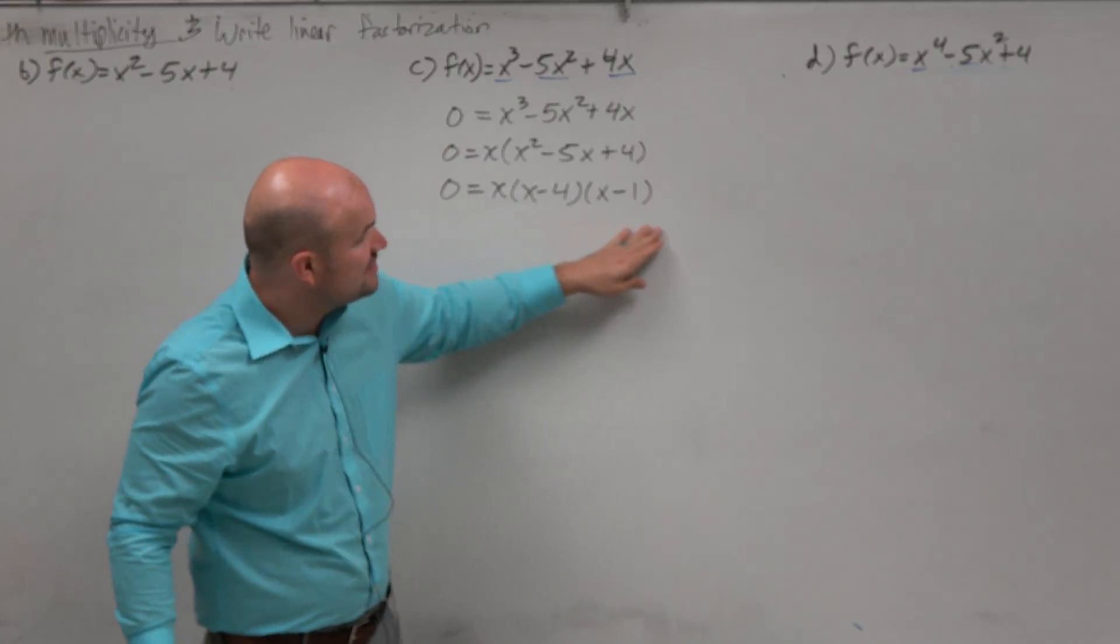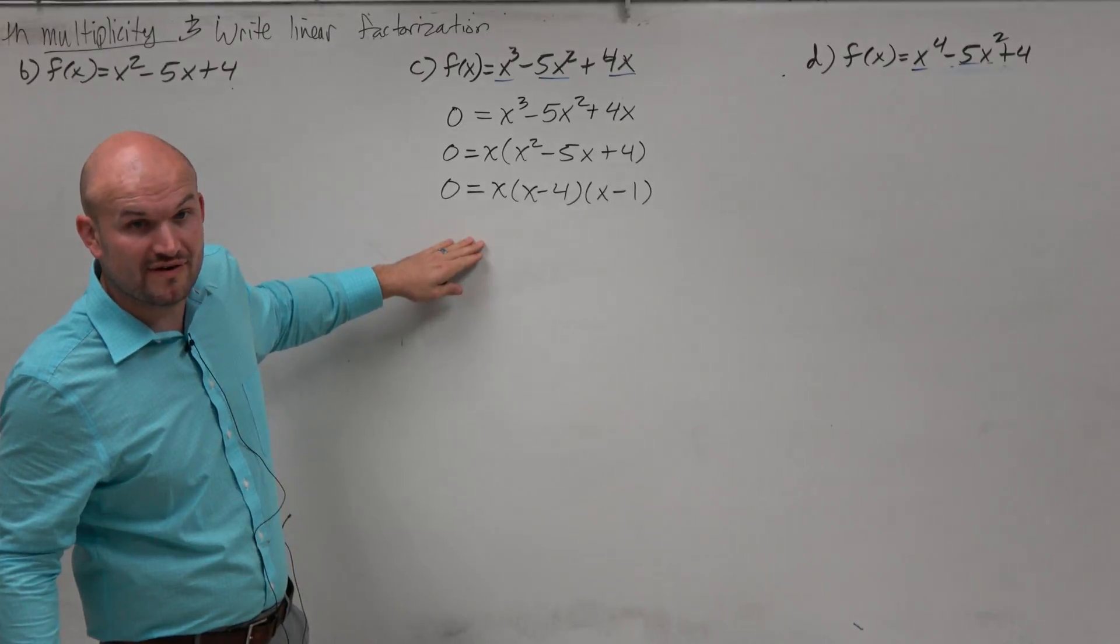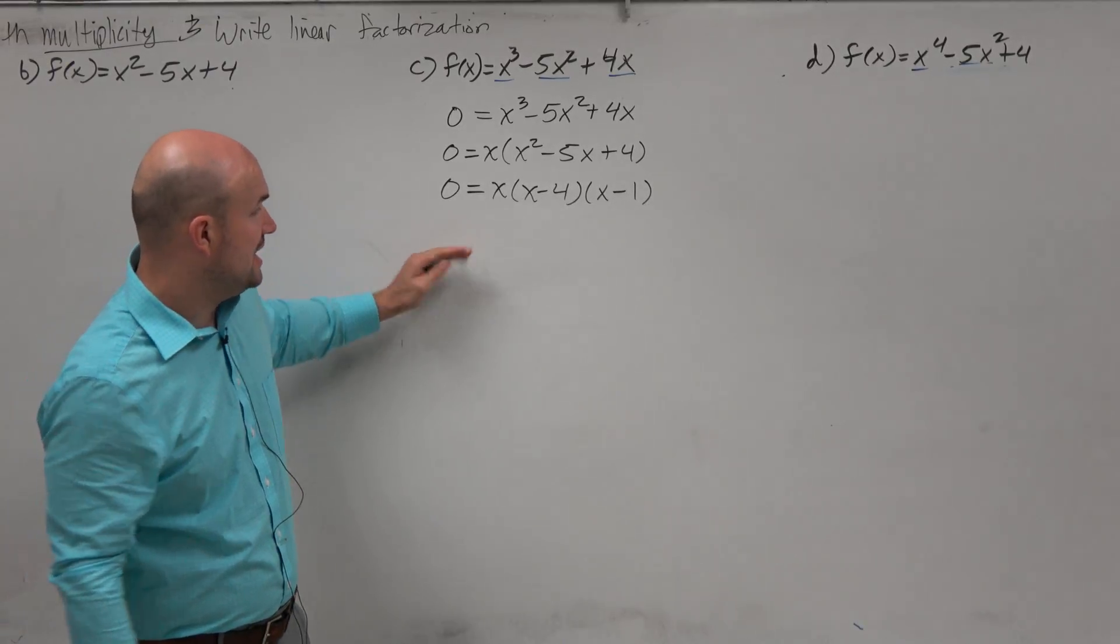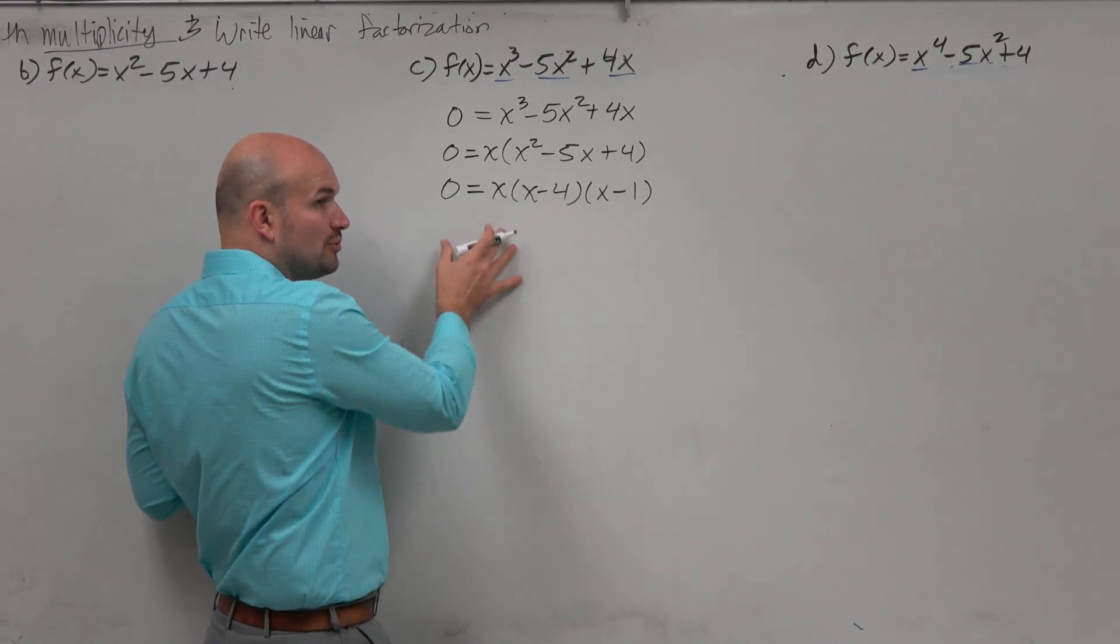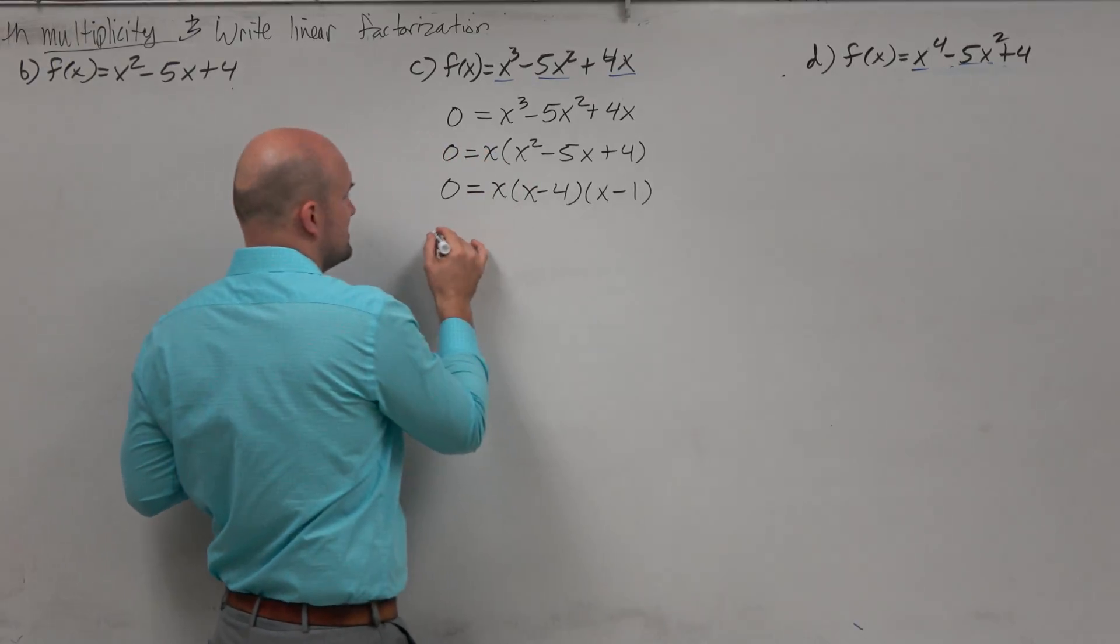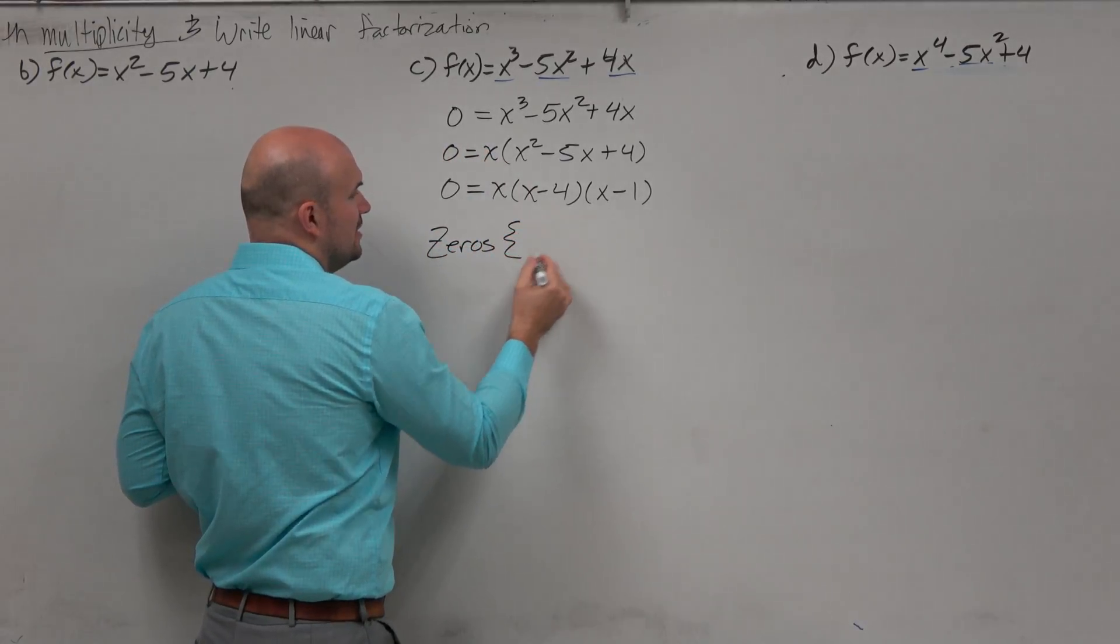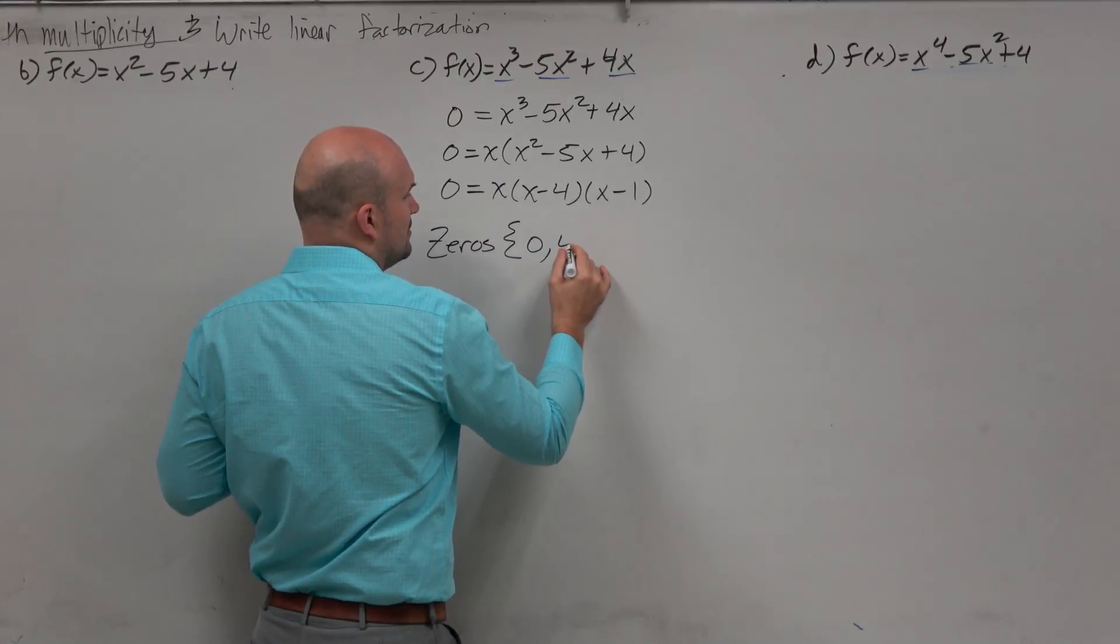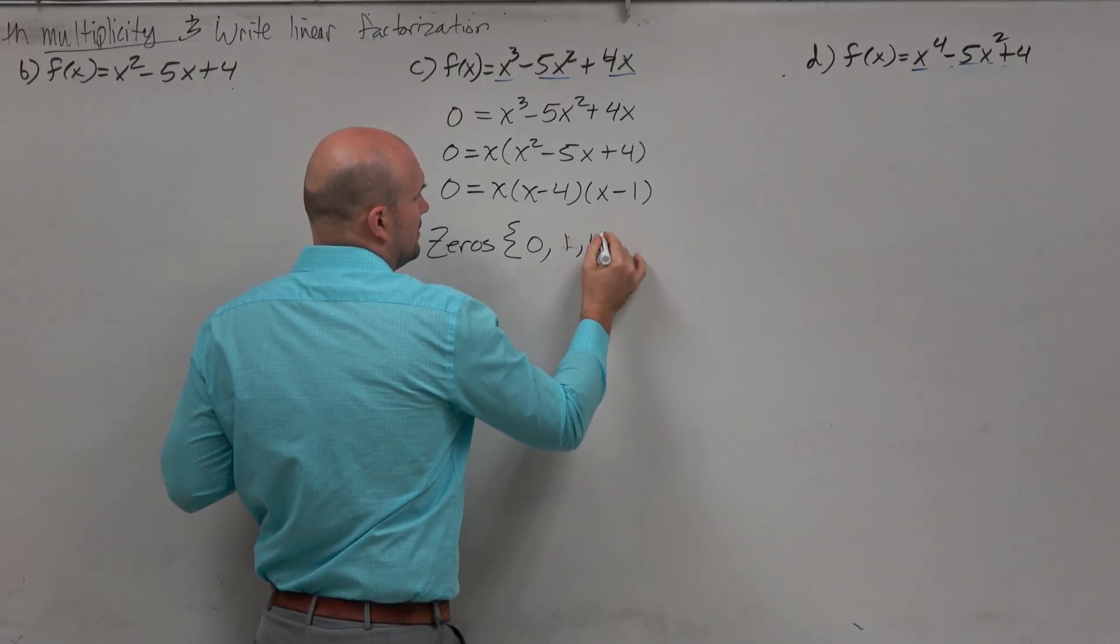Now I have rewritten this equation as a product of linear factors. And so therefore, I can use the zero product property. But to skip some steps, hopefully you guys have seen this pattern. We can just write the zeros as 0, 1, and 4.